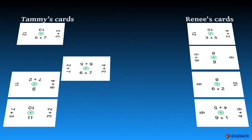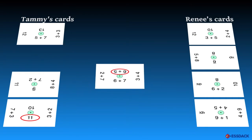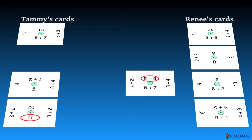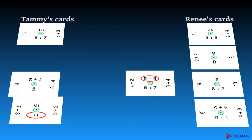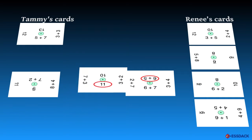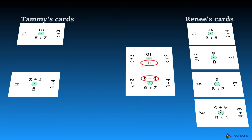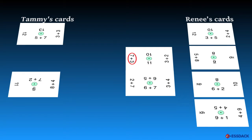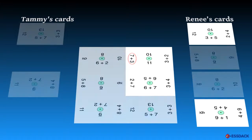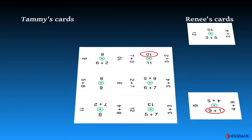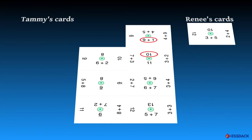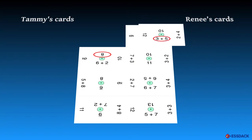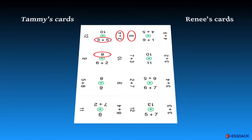So, Renee, I have an eleven on top. Do you have an eleven on the bottom? I have an eleven on the bottom. Do you have something with a ten? Nine plus one is ten, there we go. And three plus five is eight, and two plus four gives us the six, there we go.